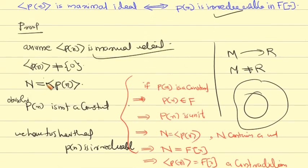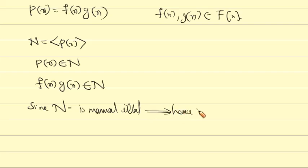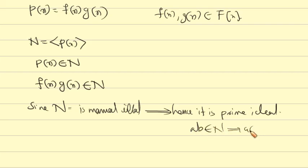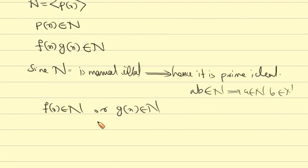Let's show that the ideal generated by p(x) is a maximal ideal, and hence it is a prime ideal. Since we have a maximal ideal, it is also a prime ideal. Therefore, if we have a prime ideal and a·b belongs to N, then either a belongs to N or b belongs to N. That is, if f(x)·g(x) belongs to N, then either f(x) belongs to N or g(x) belongs to N.